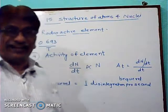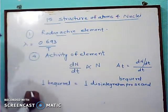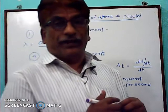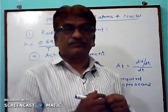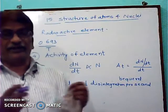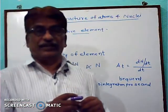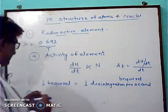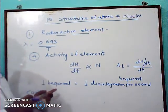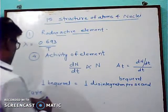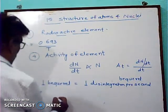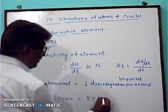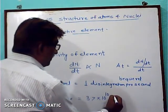Another unit for activity is the Curie. Marie Curie and Pierre Curie studied radioactivity and received a Nobel Prize for their research. So activity is also measured in Curie. One Curie is equal to 3.7 × 10¹⁰ Becquerel.